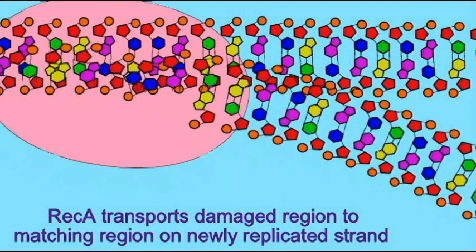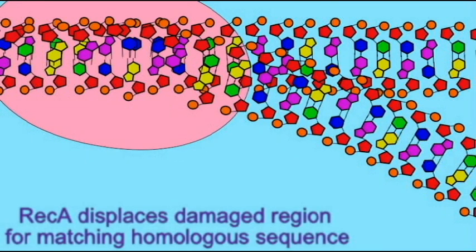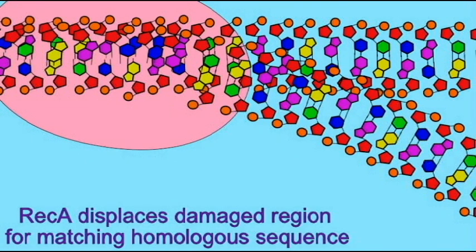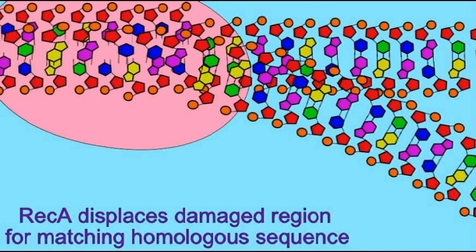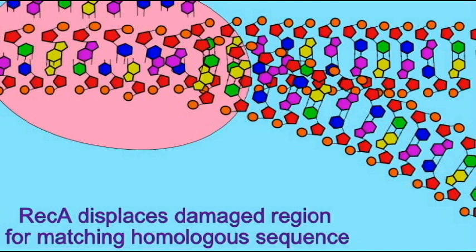It will slide along the replicated strand until it finds a homologous sequence. Once it finds a homologous sequence, it displaces the incorrect strand that has damage on it and replaces that with one of the two replicated strands.